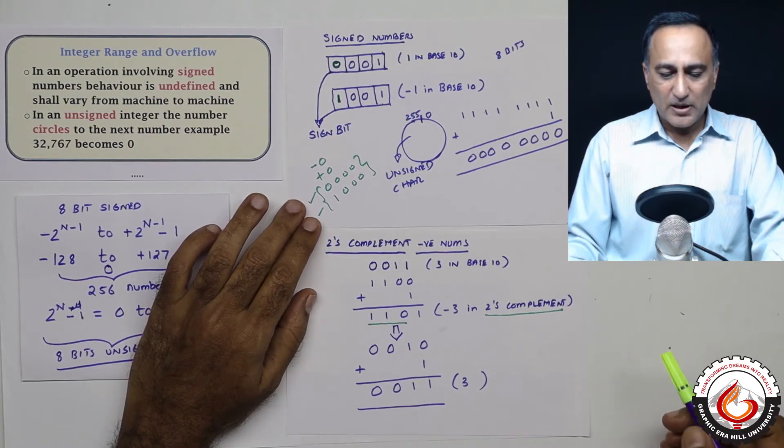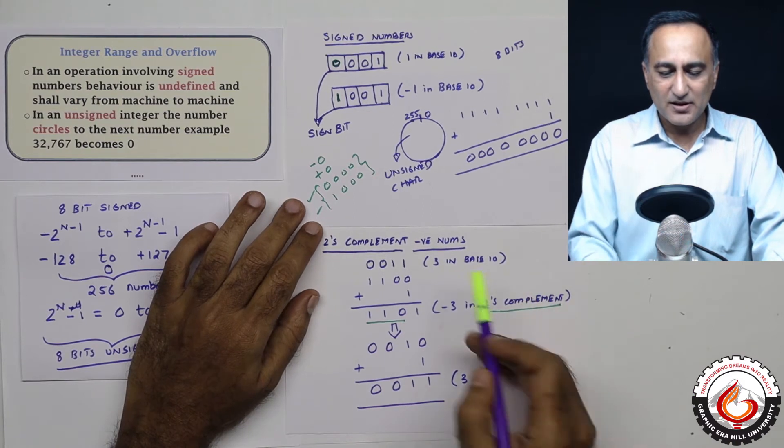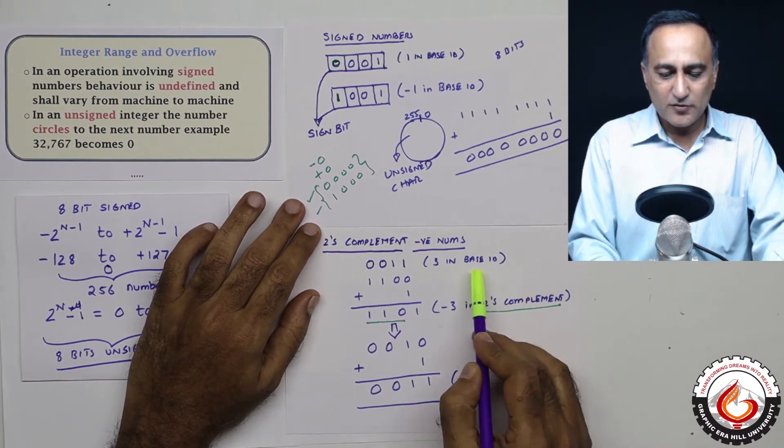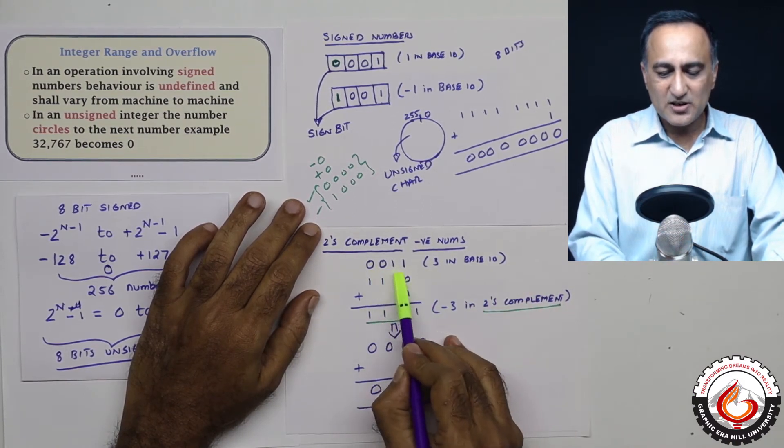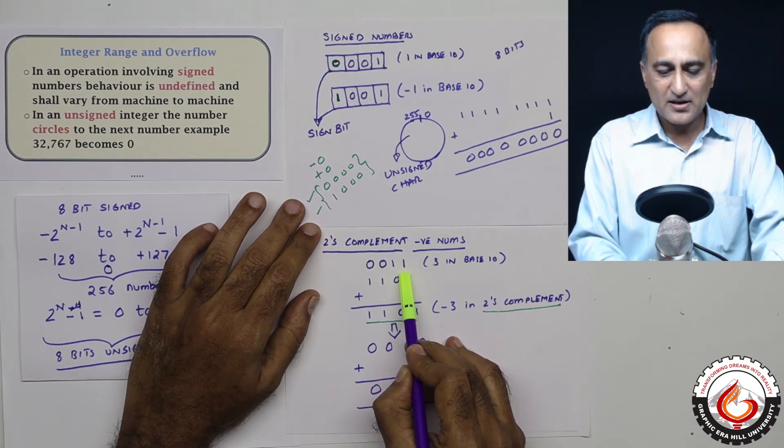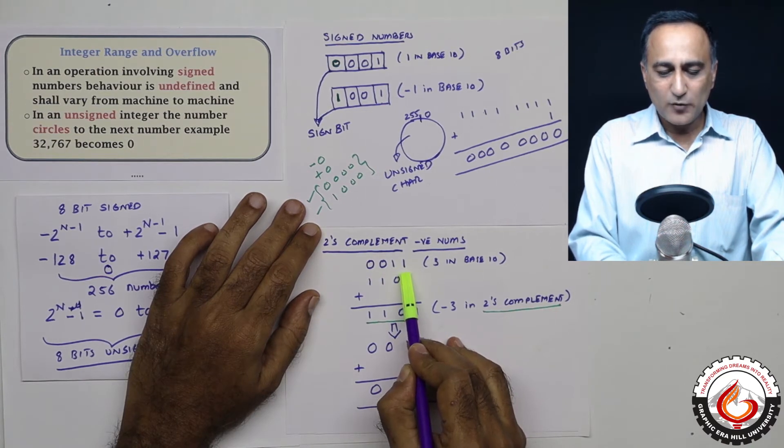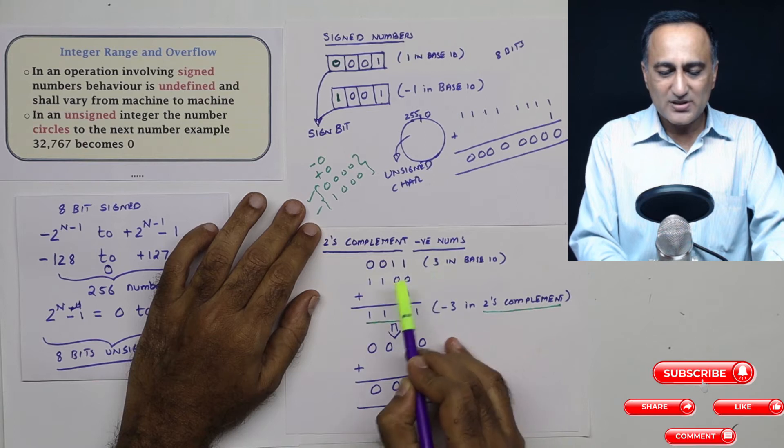So in two's complement, let's say I have number three in base 10. If you see, this is the binary representation of three in normal binary system. If I have to represent minus three, what I have to do is make the one as zero and zero as one. That's what I have done here.